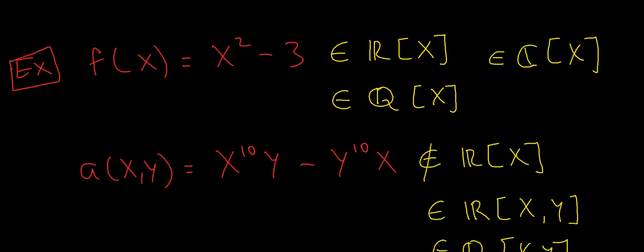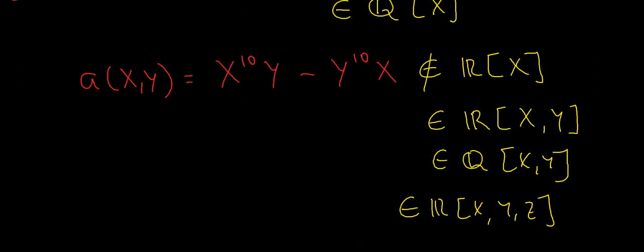Okay, how about a(x,y), defined as x to the power 10 y minus y to the power 10 x. Well, that doesn't belong to R[x]. It's certainly true that the coefficients are real, 1 and minus 1, but it's a polynomial in two variables. It's in variables x and y, and this polynomial ring only refers to polynomials in one variable. Remember, these are also finite polynomials.